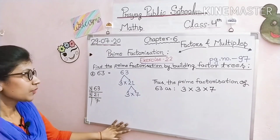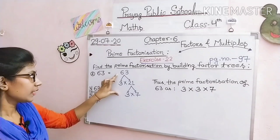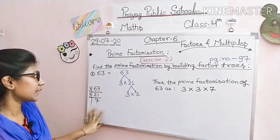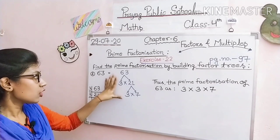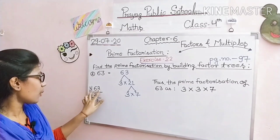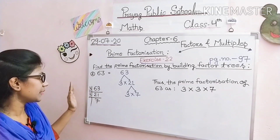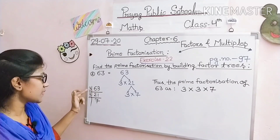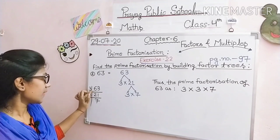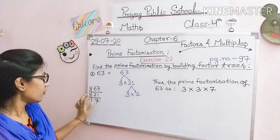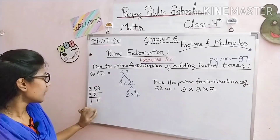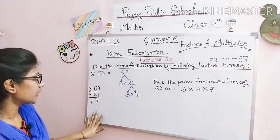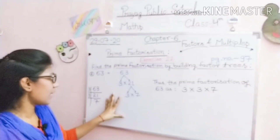Solve करने से पहले आप division method से rough में solve कर सकते हो ताकि factor tree method में लिखने में कोई problem ना हो। 63 को सबसे छोटे prime number से divide करना start करेंगे। 2 से divide नहीं होगा, इसलिए 3 से divide करेंगे: 3 × 21 = 63. फिर 3 × 7 = 21. 7 is a prime number, इसलिए यहाँ process stop करेंगे। यह rough work है।